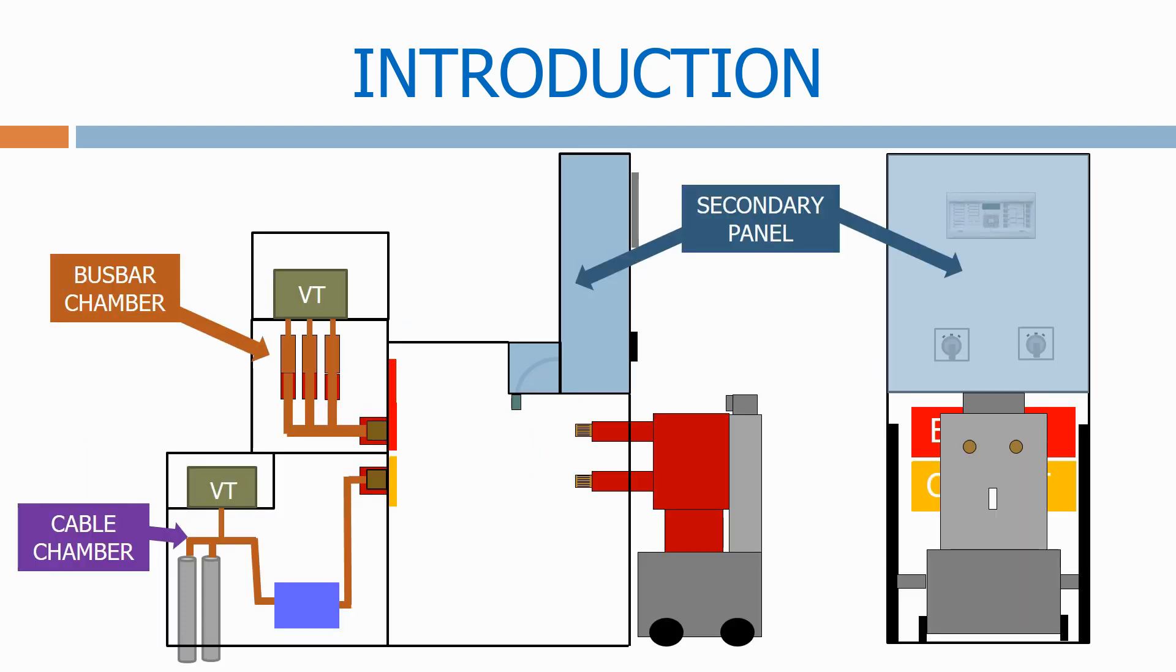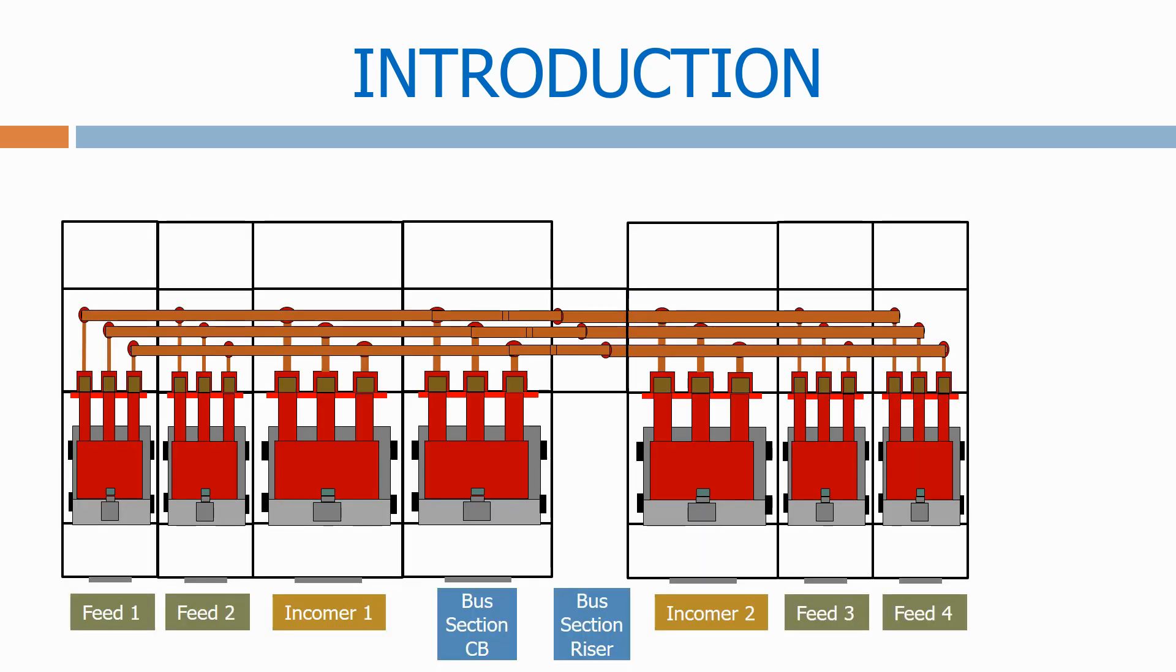Metal clad switchgear is one of the main types of equipment that we use in the distribution network. In the next section we look in detail at how this equipment operates and how all the design features make it one of the safest equipment on the network.